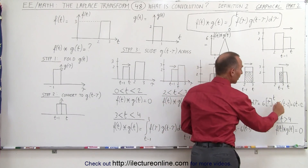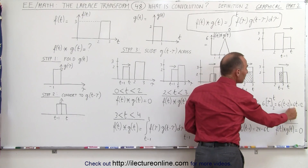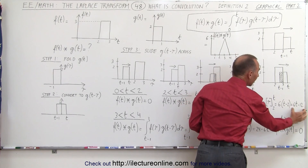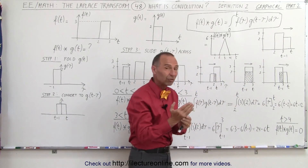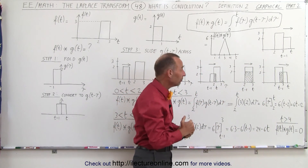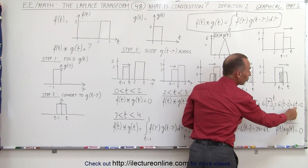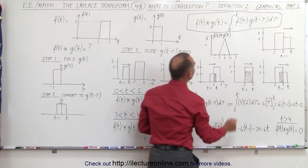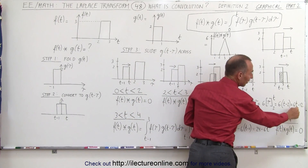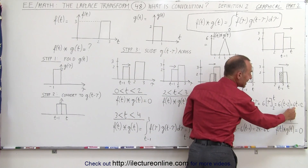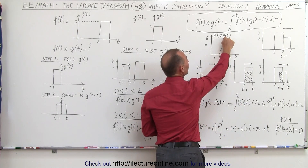We integrate to get six times τ evaluated from two to t. Plugging in the upper and lower limits we get six times t minus twelve. Notice that when t equals 2, six times 2 is 12, and 12 minus 12 is 0 — so it starts at zero. When t equals 3, six times 3 is 18 minus 12, which equals 6, so the value of the convolution is 6.